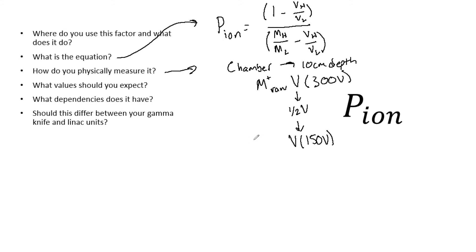Take another reading and this is going to be your M raw minus, and this 150 is our low voltage. So now you have all the readings and measurements necessary. You simply just plug them in to this equation and you find P ion.